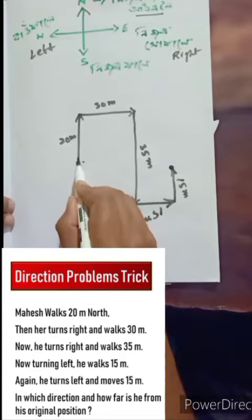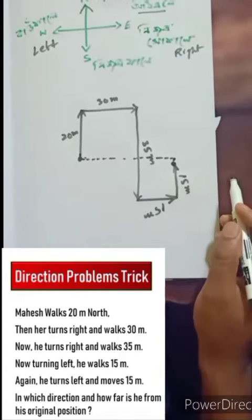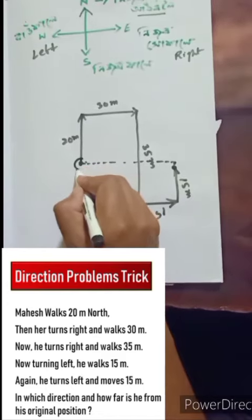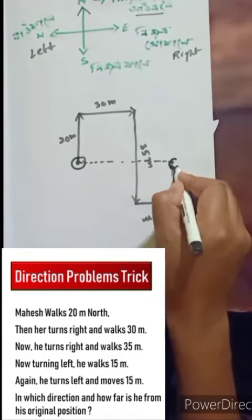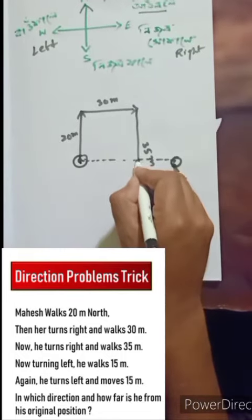How much distance is the final position from the original position? How much direction from the original position? The distance will be 30 meters.